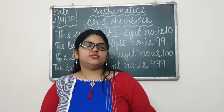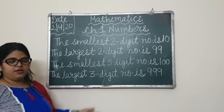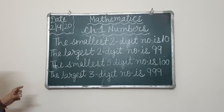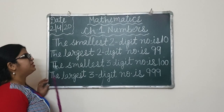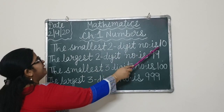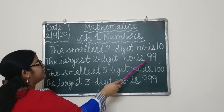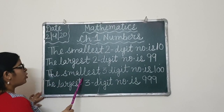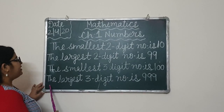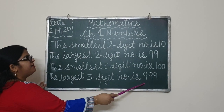In the previous class we learnt about 2-digit numbers and 3-digit numbers. Now we start with a small recap. The smallest 2-digit number is 10. The largest 2-digit number is 99. The smallest 3-digit number is 100. The largest 3-digit number is 999.